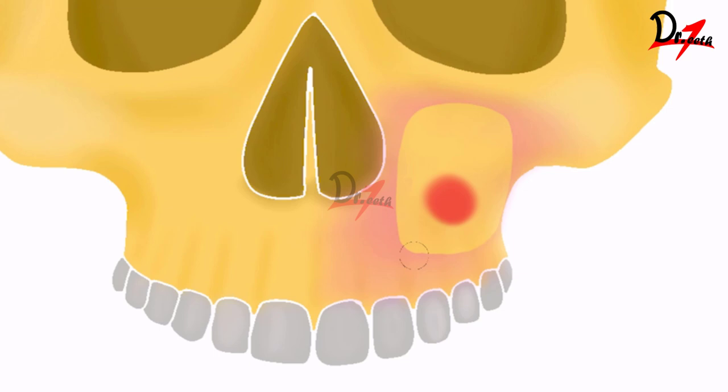Once we have gained entry, we can irrigate the sinus thoroughly and remove any tooth fragment present. We must inspect the sinus properly and remove any tooth or foreign substance. If the maxillary sinus lining is infected, we can use a periosteal elevator to remove it, and that can be sent to the lab for histopathological examination.